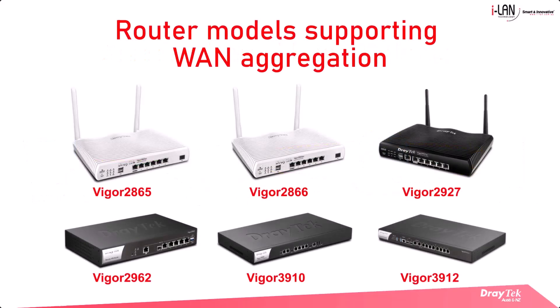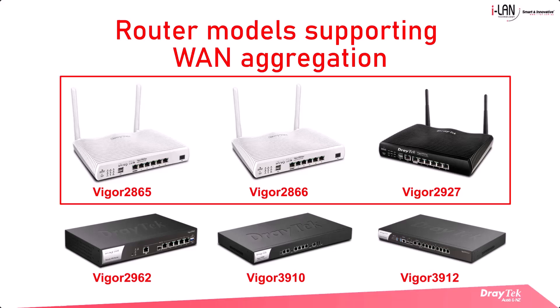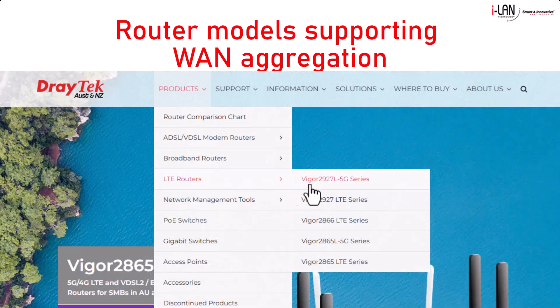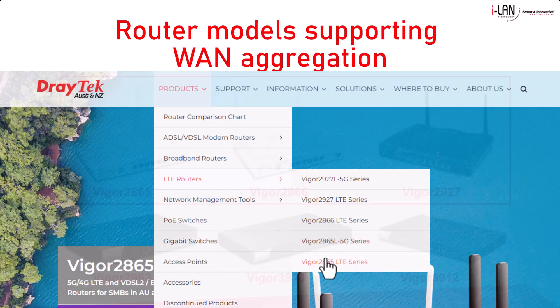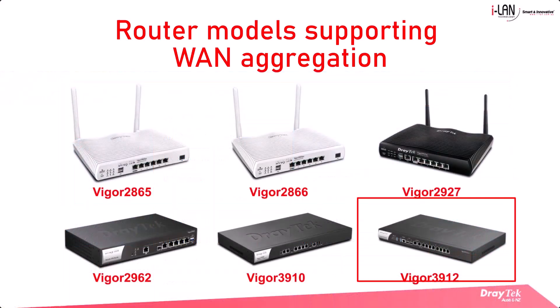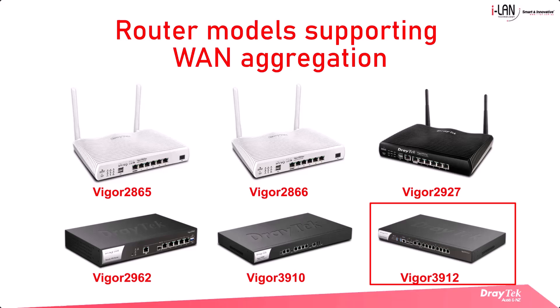Here are the current routers that support WAN aggregation. Note that wireless models also support wireless WAN, where you can connect the router to a WiFi hotspot. LTE models in the 2865, 2866, and 2927 series can connect to an LTE service with a SIM. Other models have USB ports to allow connection of a USB LTE modem. WAN aggregation supports up to eight WANs, including 10 Gigabit Fiber and 2.5 Gigabit Ethernet.